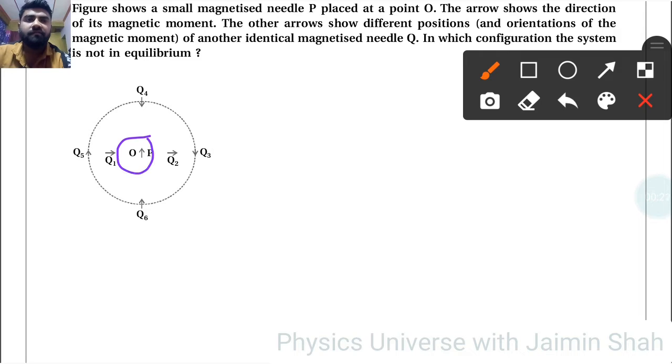First of all, this is our magnetized needle, right? And Q1 and Q2 both are on the equatorial point of that, and both are in the same direction.